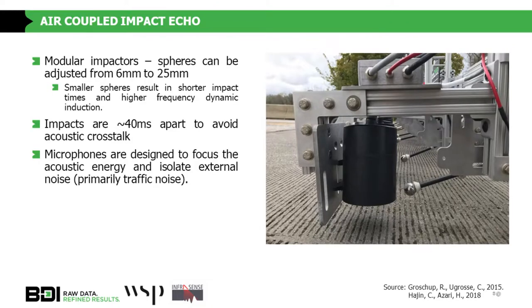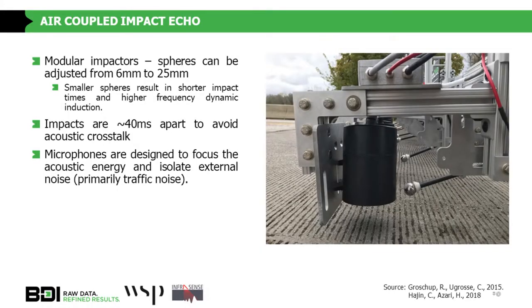We have motor impactors with sphere sizes varying from 6 mm to 25 mm depending on what depth of flaw the state is concerned about — these are interchangeable. Impacts are made 40 milliseconds apart to avoid acoustic crosstalk. The microphones are designed to get rid of acoustic noise and isolate the energy we want, primarily filtering out traffic noise. Federal Highway and other researchers have done significant research on air-coupled acoustics, noting that we need to isolate noise because leaky Rayleigh waves — surface waves — dominate over the faint signals we are actually looking for.